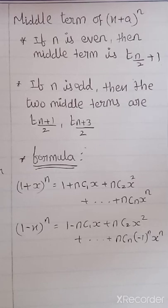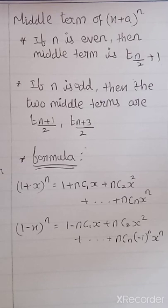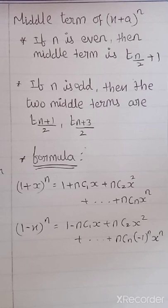So what have we seen? Binomial theorem: X plus A power N formula. And term formula T(R+1) equal to NCR X^(N-R) A^R. Next, finding middle terms — if N is even, one formula; if N is odd, another formula. And last: two special formulas for 1 plus X power N and 1 minus X power N.